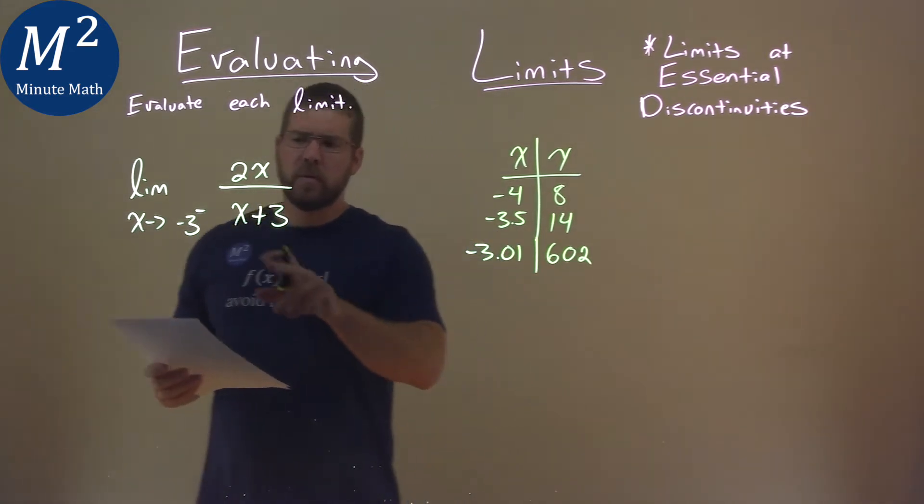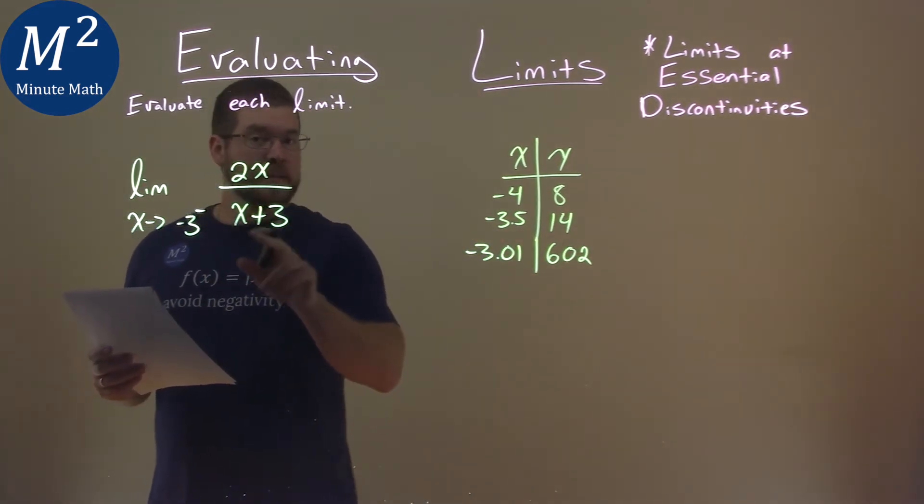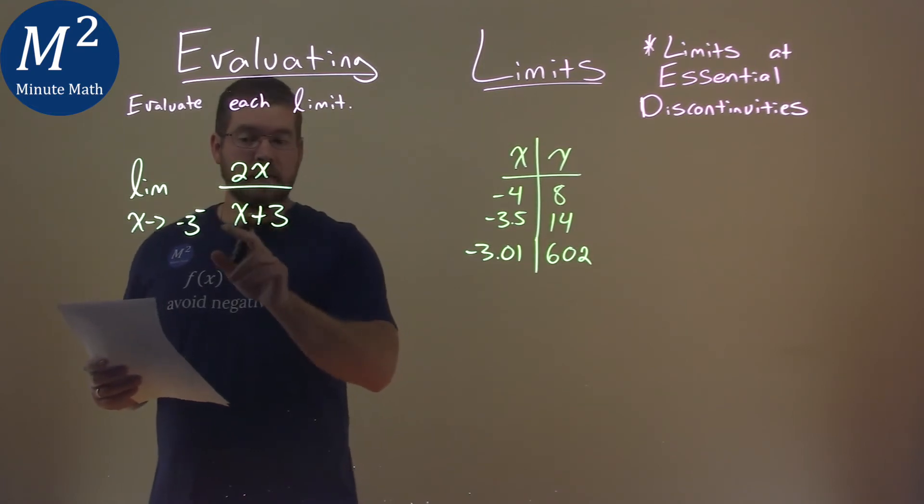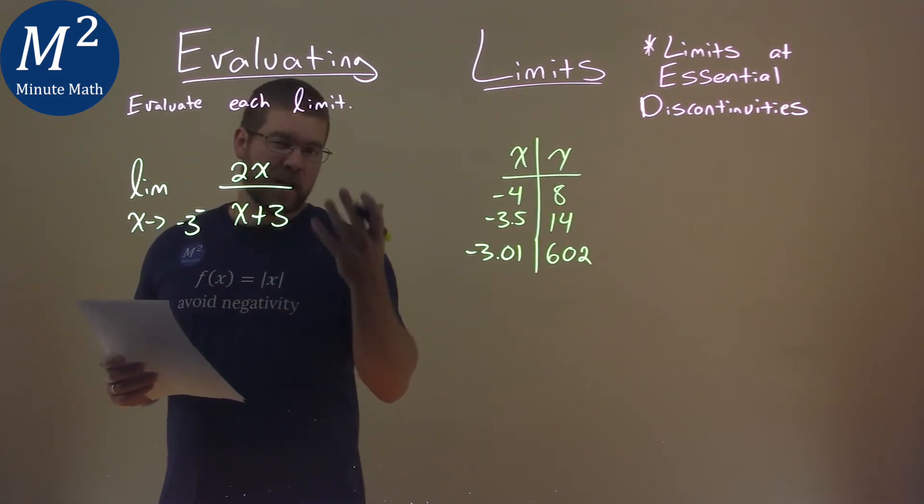But why? Well, when we're dividing here by what's going to be approaching zero, right? As negative 3 goes in for x, we're dividing by zero.